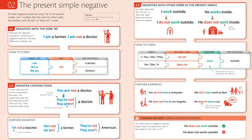Taking further examples — repeat after me, this is partially pronunciation and partially grammar: 'You do not have a computer,' or 'You don't have a computer.' 'We don't start work at 8am.' 'He doesn't live in Los Angeles.' 'He doesn't have a car.'